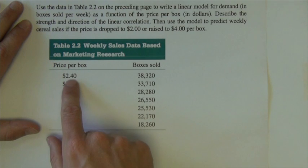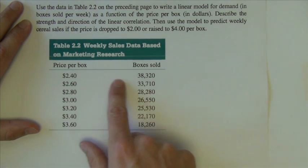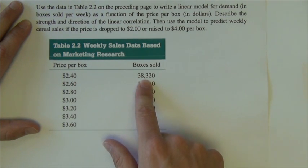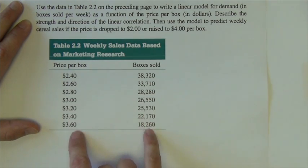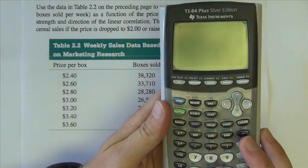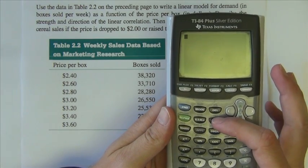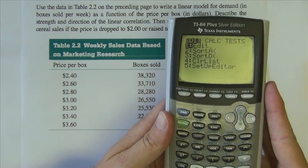We can see that as the price per box went up, the sales went down. As the price gets cheaper and cheaper, sales are bigger. So can we describe this with a linear model? Here's how we're going to do this on the calculator. First thing I'm going to do is go into STAT - it's got the word STAT on it.